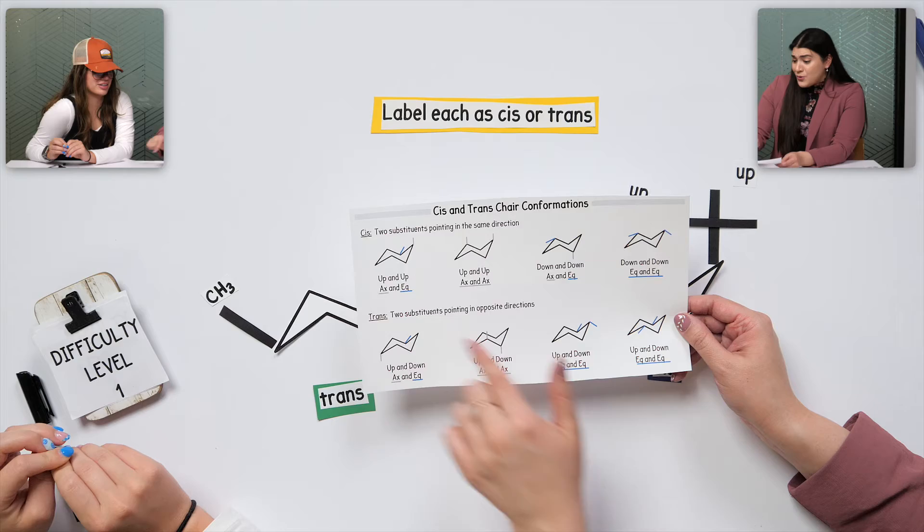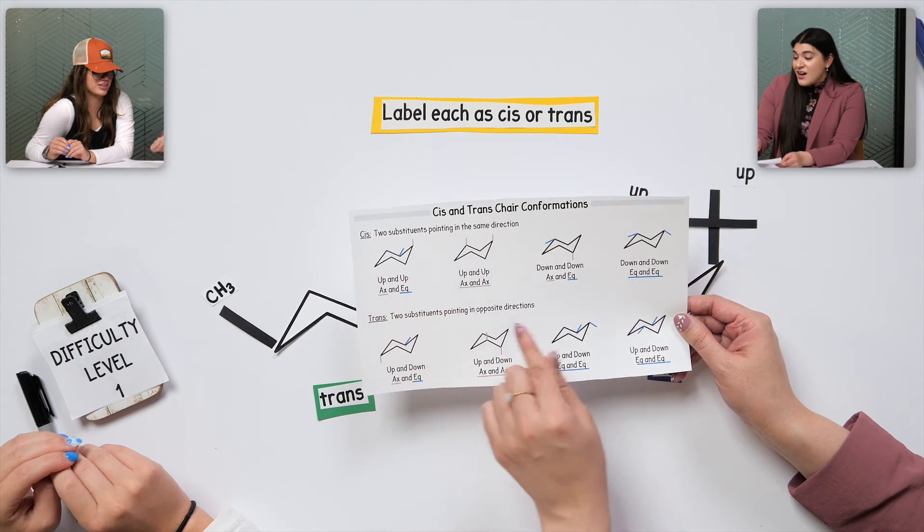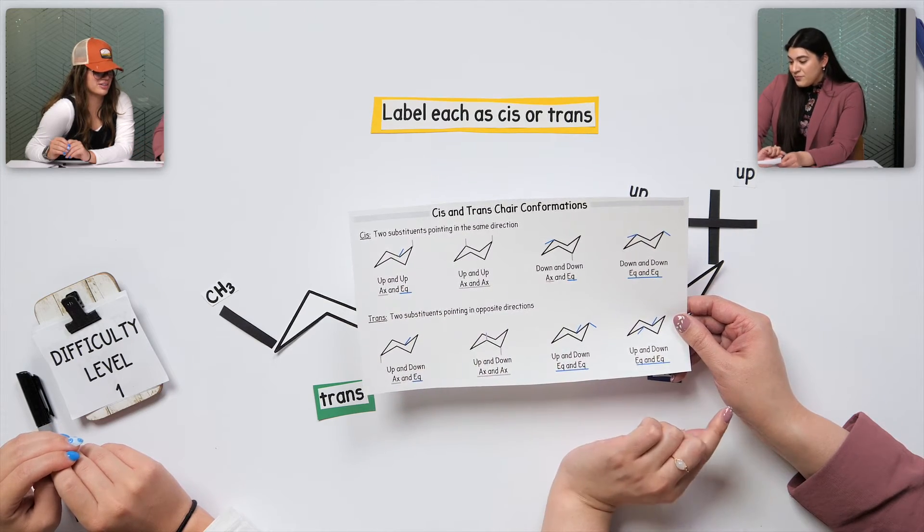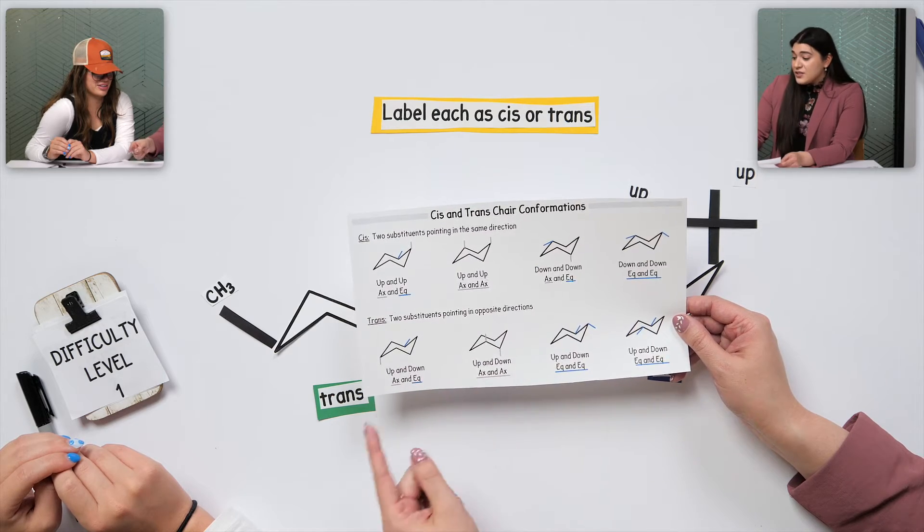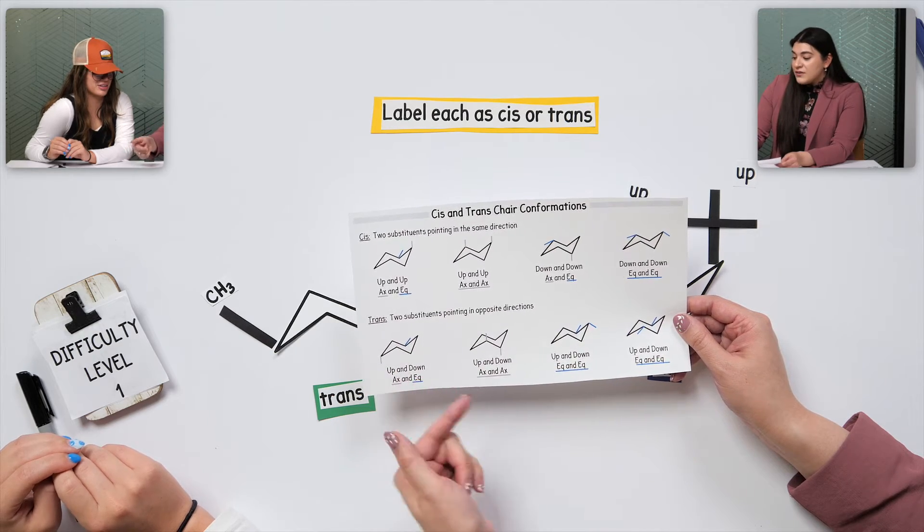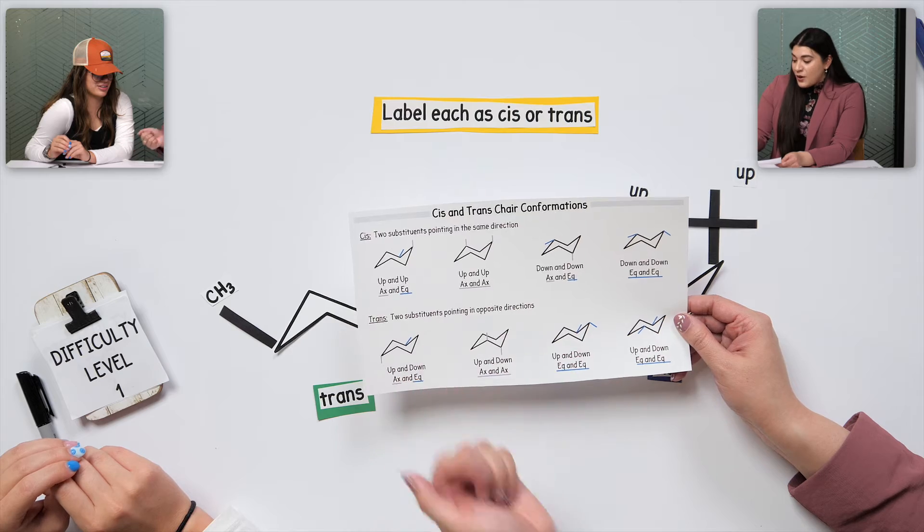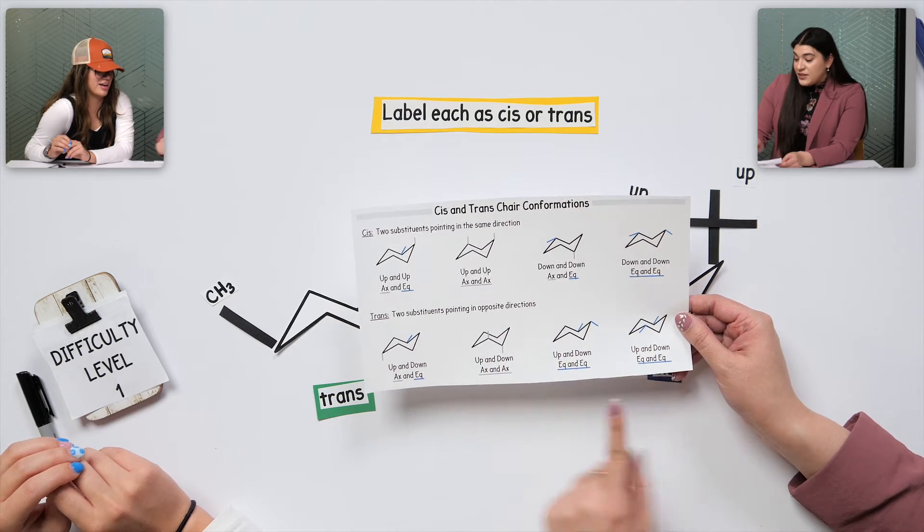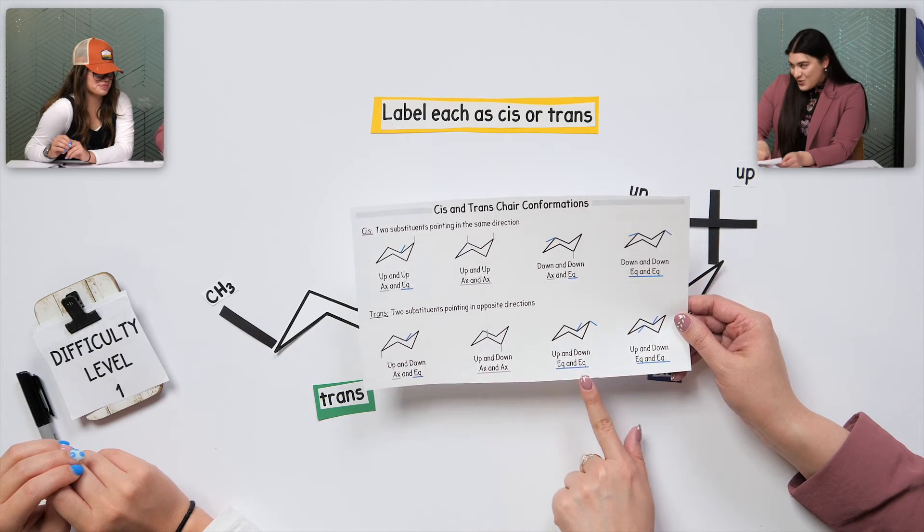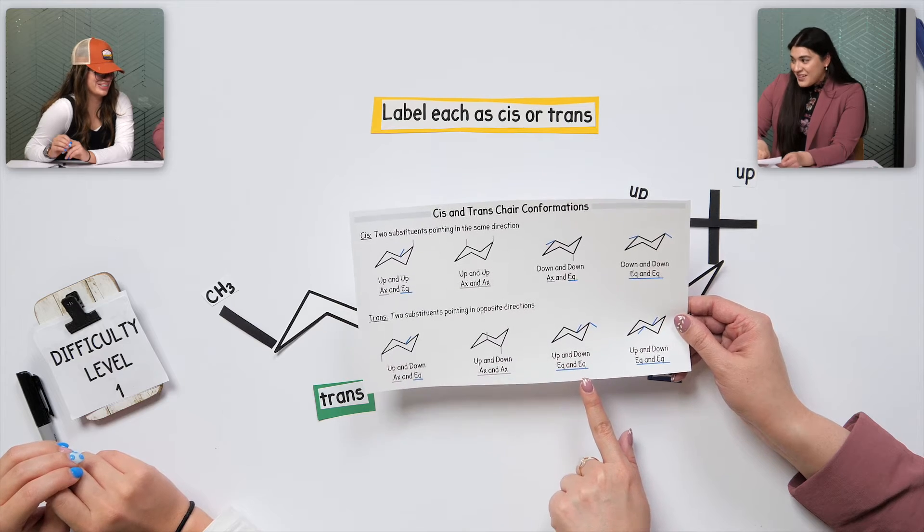Yeah. You know, axial, equatorial. Really, we're just looking at the direction of where the substituents are pointed. And then same concept with trans. It's just both of them are opposite, right? Or we have one that's up, one that's down, and so on. Yeah. But we could have axial and axial, equatorial and equatorial.